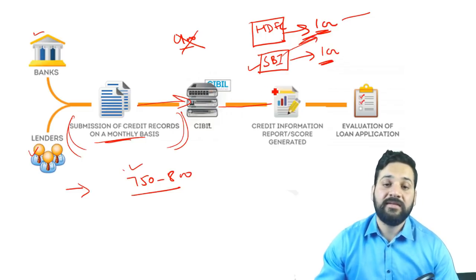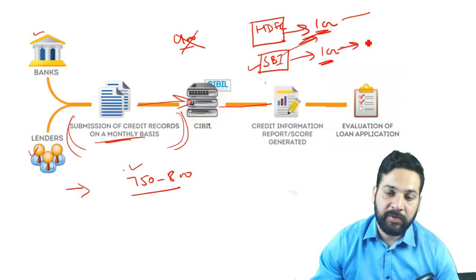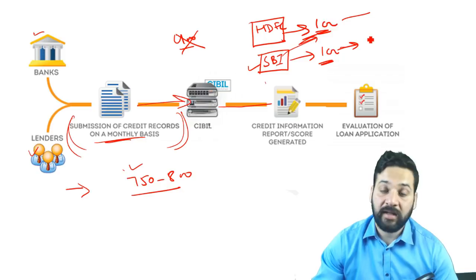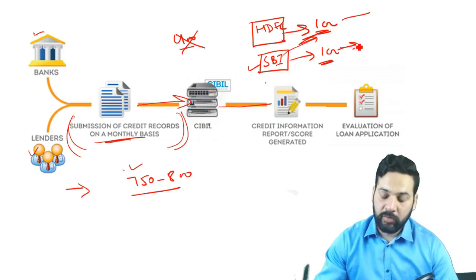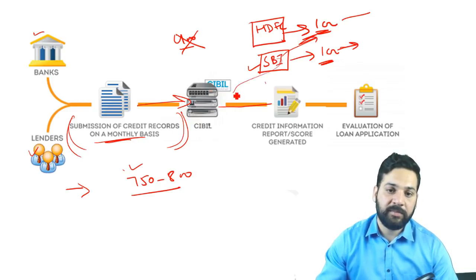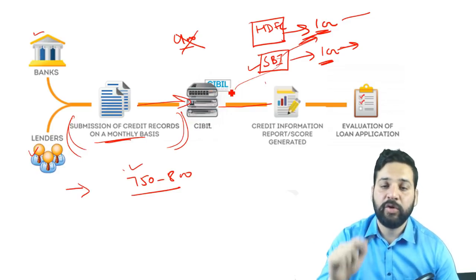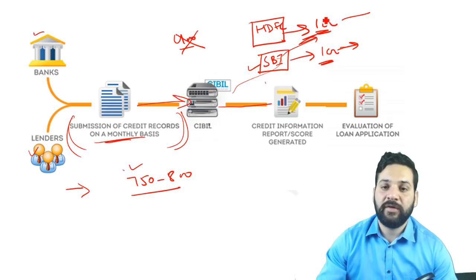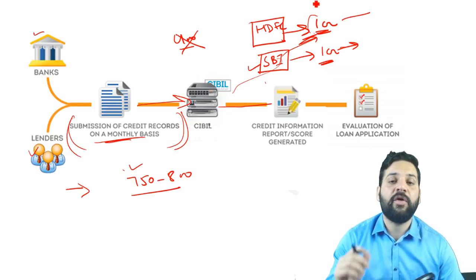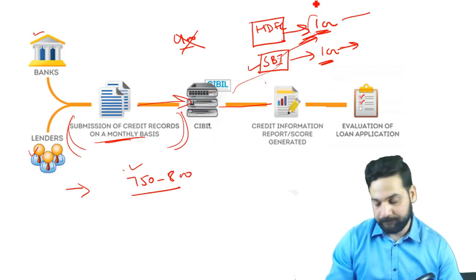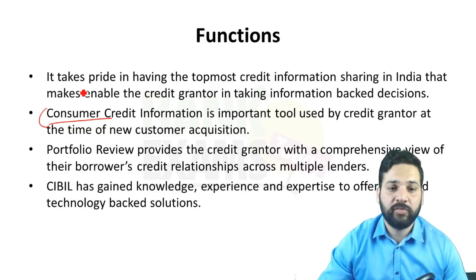That's where CIBIL comes in. Whenever such a person comes to SBI, they provide their Aadhaar number and PAN. SBI feeds this data into CIBIL's database and the person's entire credit history comes out. SBI will then know that you have already defaulted on a one crore rupee loan from HDFC, so the loan will be rejected. This enables an informed and more efficient decision.